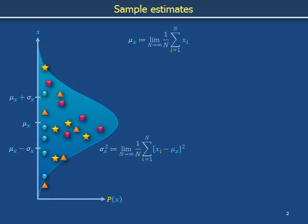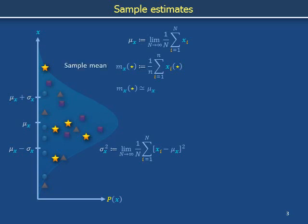Let's talk about the experiment where we obtain the five stars. We only have five stars — we don't have arbitrarily large numbers of stars, and we don't have enough data points to use the μx formula. We need to devise a substitute: we take the star data points x sub i star, add them up, and divide by the number of samples in the data set, here n equals 5. In this equation there is no reference to the idea of a limit. m sub x, written with parentheses star, is called the sample mean — our estimate using the limited set of five stars for the actual mean μx of the actual distribution.